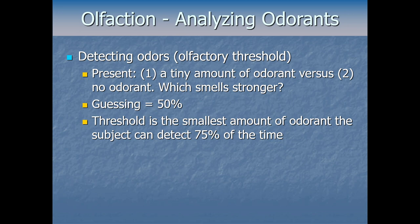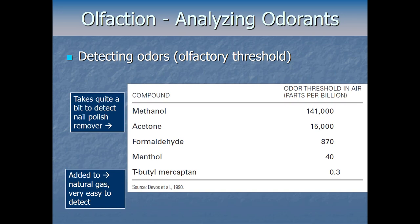The threshold differs for different chemicals, so this test must be run for different odorants. For something like methanol, it takes a fair amount. Even acetone — nail polish remover — which you might think is a strong smell, requires about 15,000 parts per billion before humans can detect it 75% of the time. So nail polish remover actually takes quite a bit before you can detect it at all.